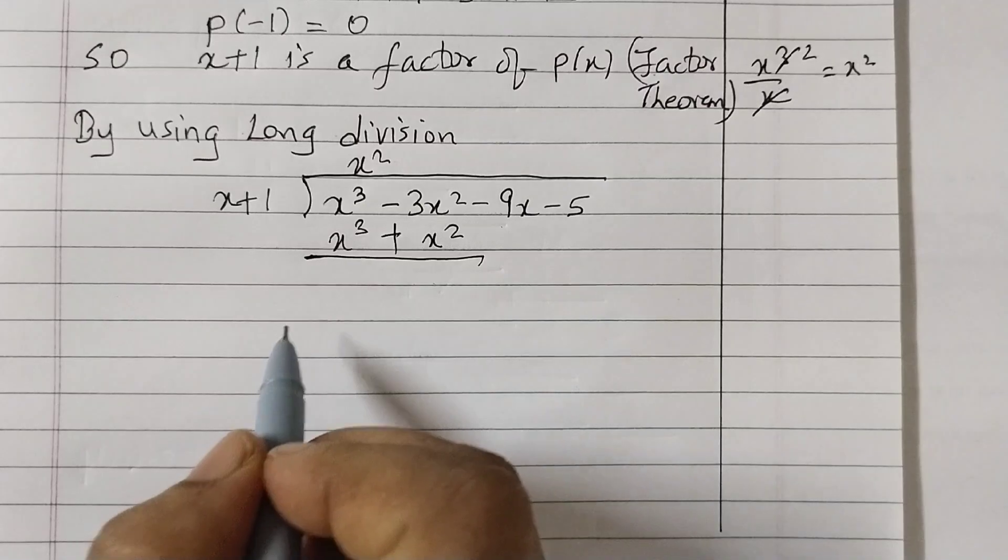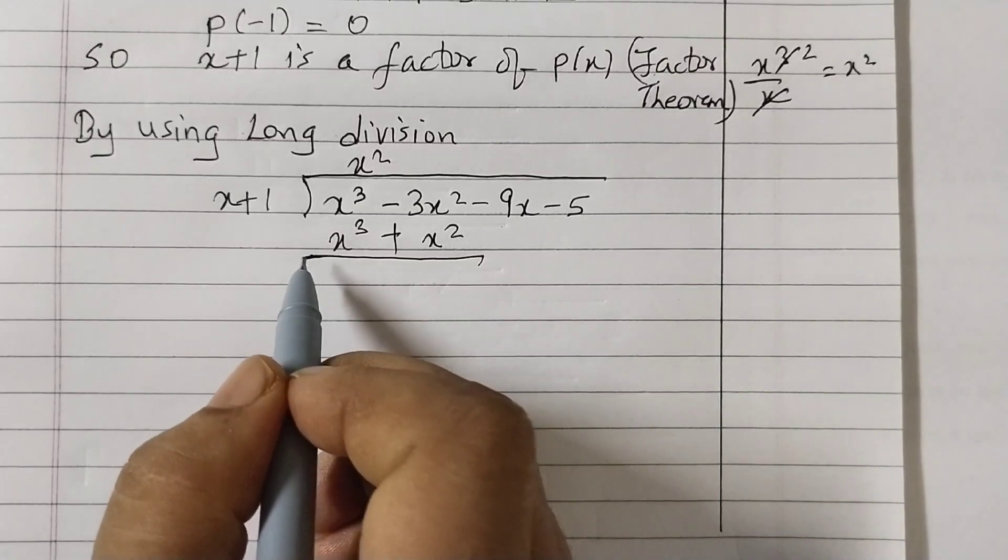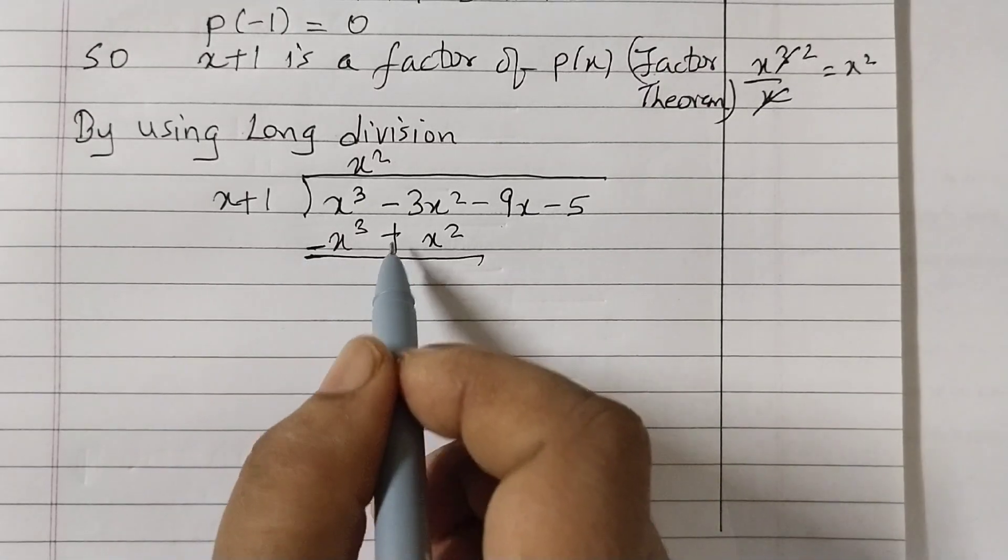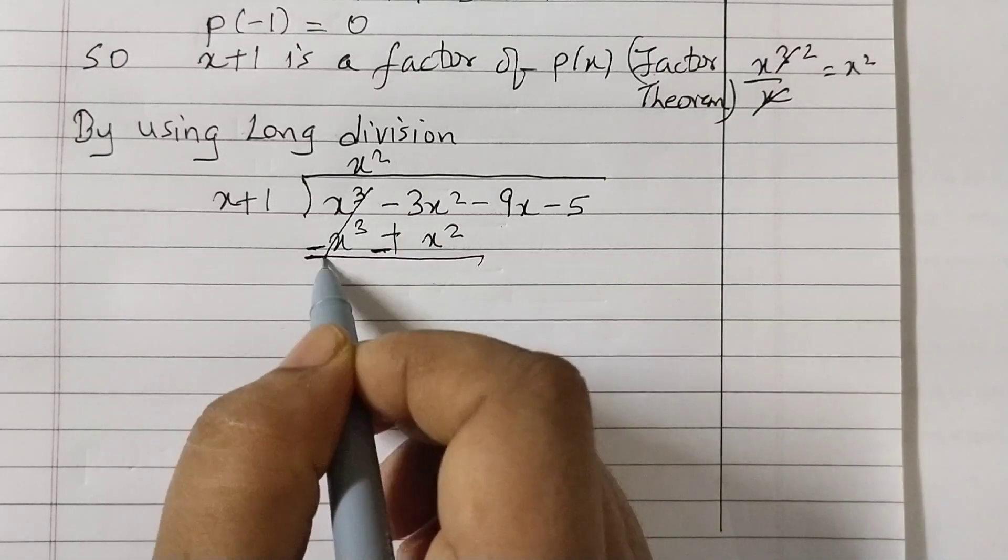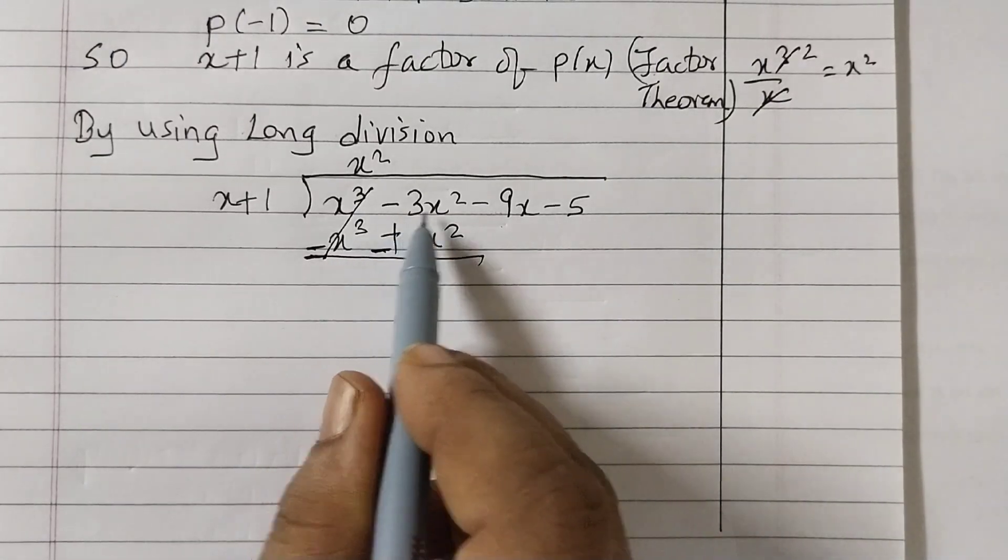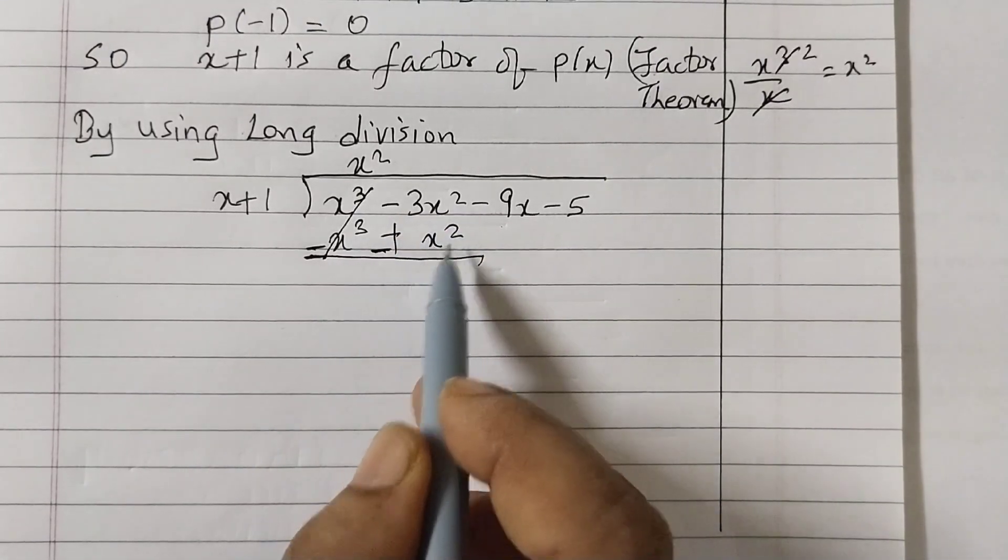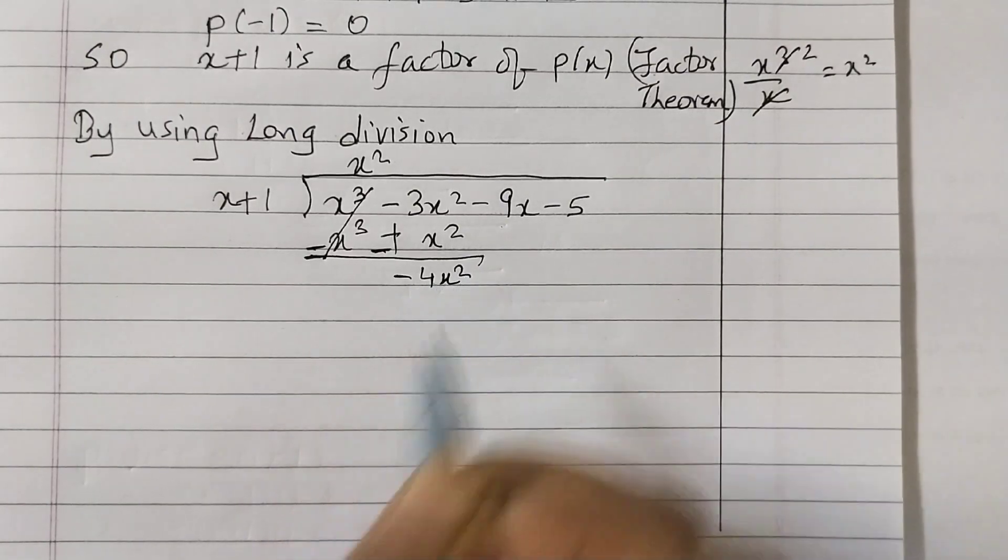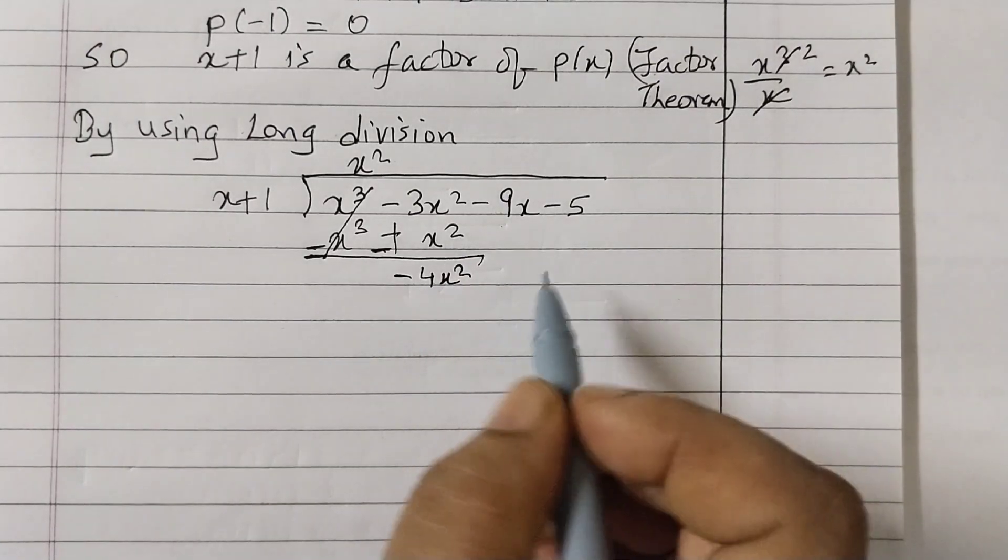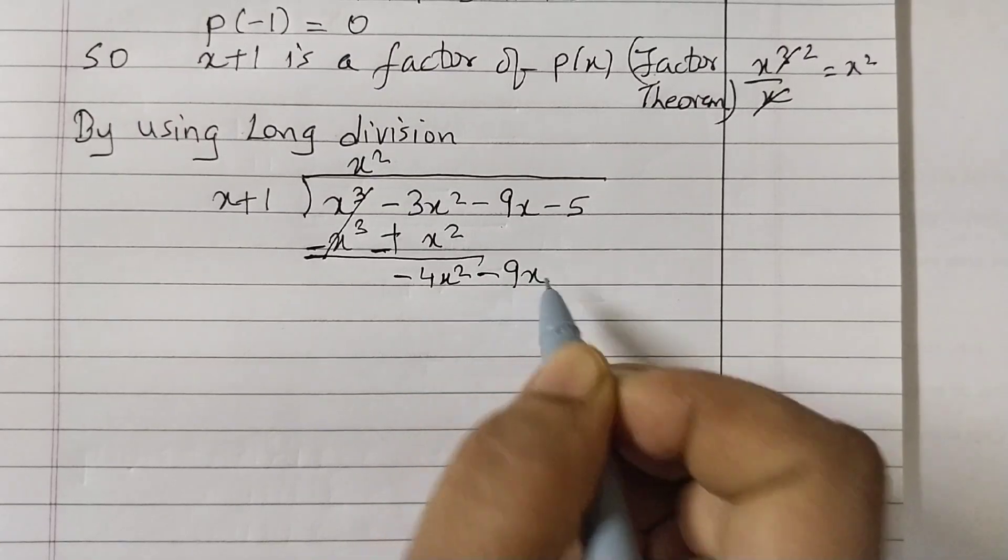x cubed by x, x cancels out so this is x squared. Multiply by x squared: x plus 1 multiplied by x squared, so that's x cubed plus x squared. So when we subtract we change the sign. Cancels out, minus 3x squared minus x squared, that's minus 4x squared. Bring down the next term minus 9x.